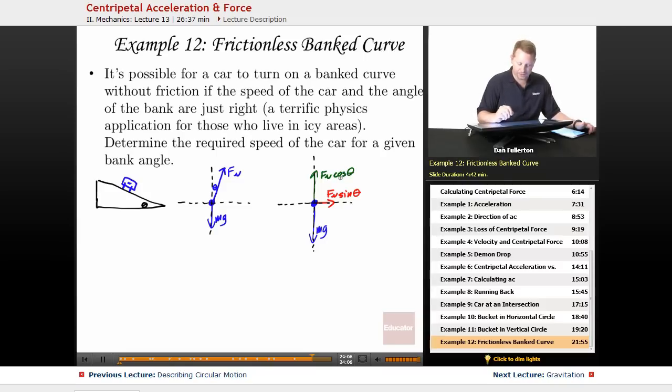So once I have that, my pseudo free body diagram, I can come back here and I can write my Newton's second law equation. F net C equals, well, I'm going to replace F net C with all of the different forces I have pointing toward the center of the circle. In that case, it's Fn sin theta. So, Fn sin theta points toward the center of the circle. And I know that must be equal to mv squared over r.